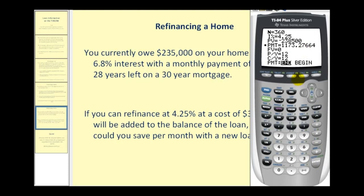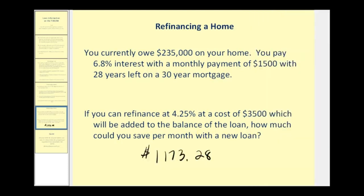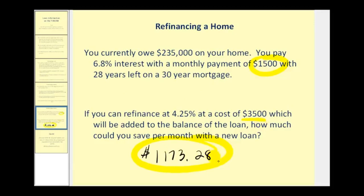Comparing these two monthly payments, you can see it drops considerably — well over $300 saved per month. The only thing to consider is that this new loan is for 30 years versus the existing loan which only has 28 years left. But in most cases, this refinance at a lower rate, even though there are some additional costs, is going to save a considerable amount of money each month.